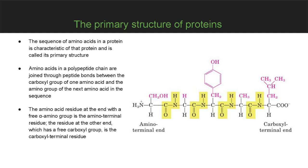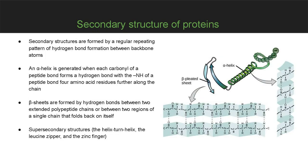The amino-terminal end contains the free amino group, and the carboxyl-terminal end carries a negative charge. This linear structure can then be converted into a more complex structure, because side groups can interact with each other to form a three-dimensional structure, which we call secondary structure.